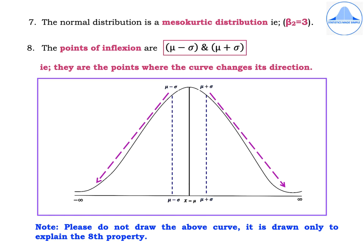Property 7: The normal distribution is a mesokurtic distribution, that is beta 2 equals 3. Kurtosis refers to the peakedness of the curve. A very peaked curve is leptokurtic (beta2 > 3), a very flat curve is platykurtic (beta2 < 3), and a curve that is neither very peaked nor very flat is mesokurtic (beta2 = 3). The normal distribution is mesokurtic.